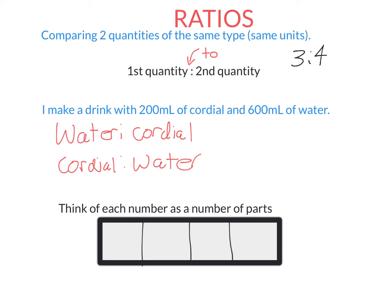Ratios can have more than two numbers in them. For example, this is 4 to 6 to 7. These are valid ratios, and we think of each of these numbers as a number of parts. Let's illustrate this with an example.